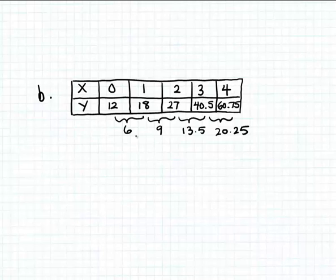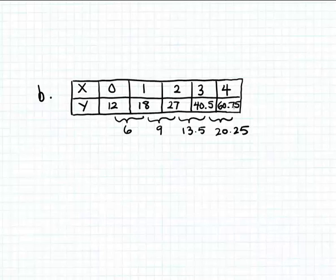This is not a linear function, but it could be an exponential function, because perhaps these changes in the output represent a steady percentage increase as opposed to just a steady increase. Let's check that by calculating percent changes. If those percent changes are all the same — all constant — then this would be an example of an exponential function.